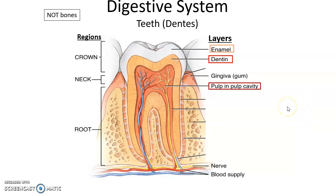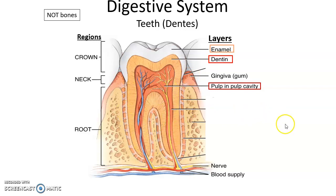Teeth are also known as dentes — hence dentists being called dentists. Teeth are not bones. Teeth can be broken down into three regions. The crown is the part of the tooth above the gum line. The neck is at the gum line, at the gingiva. And of course the root, which is the part of the tooth within the bone. So: crown, neck, root.